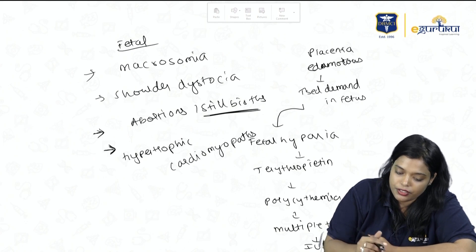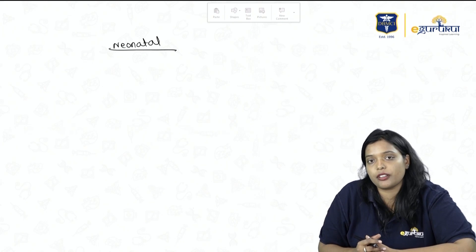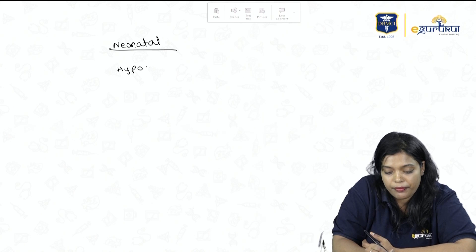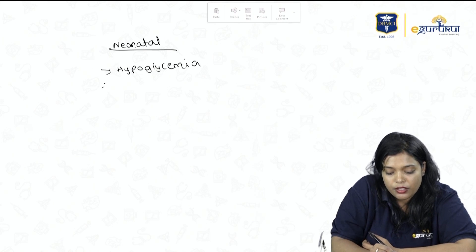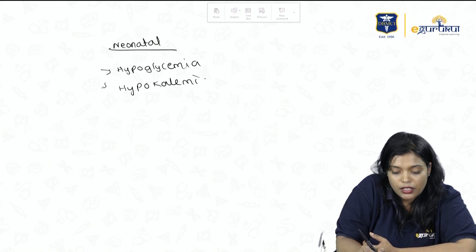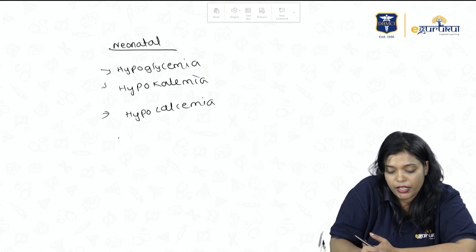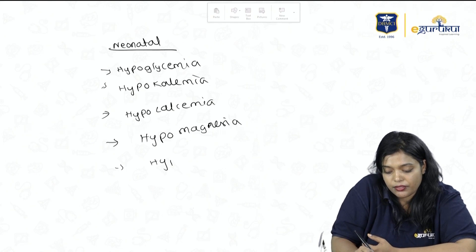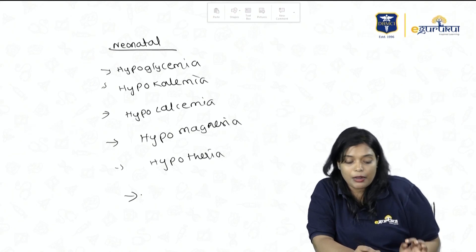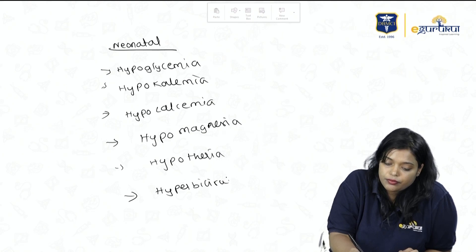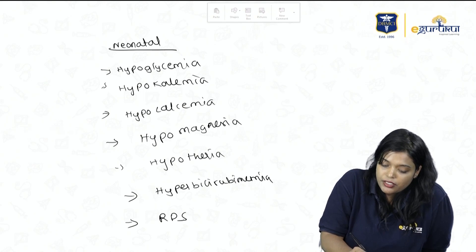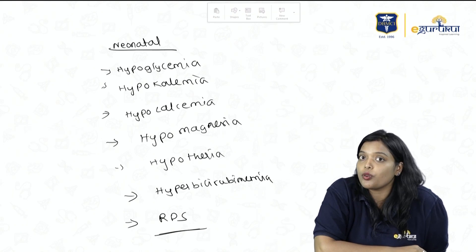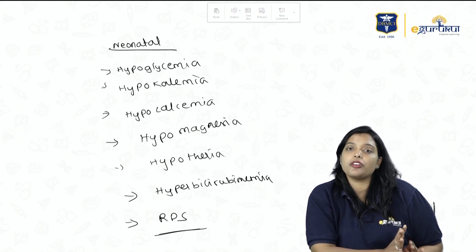Neonatal complications: after birth, maternal glucose is no longer supplied, but fetal insulin levels remain high, causing hypoglycemia. Insulin also drives potassium, calcium, and magnesium intracellularly, causing hypokalemia, hypocalcemia, and hypomagnesemia. Because of increased body surface area, heat dissipates faster, causing hypothermia. Polycythemia leads to increased RBC breakdown, causing hyperbilirubinemia and jaundice. Increased insulin decreases surfactant production, leading to respiratory distress syndrome (RDS).